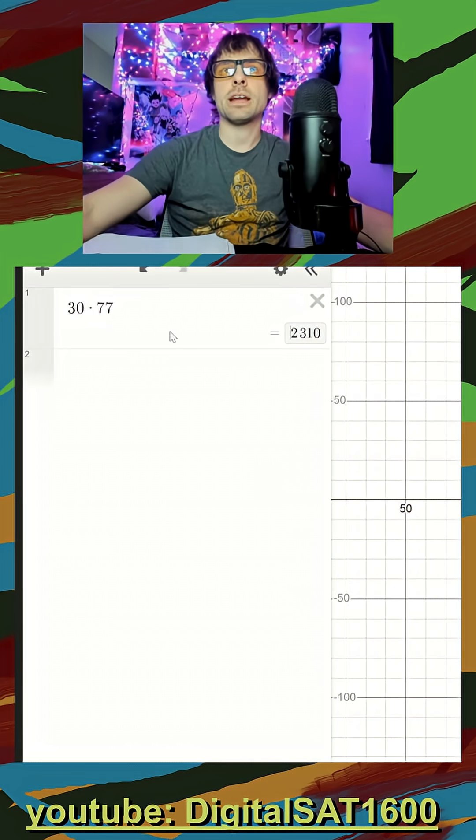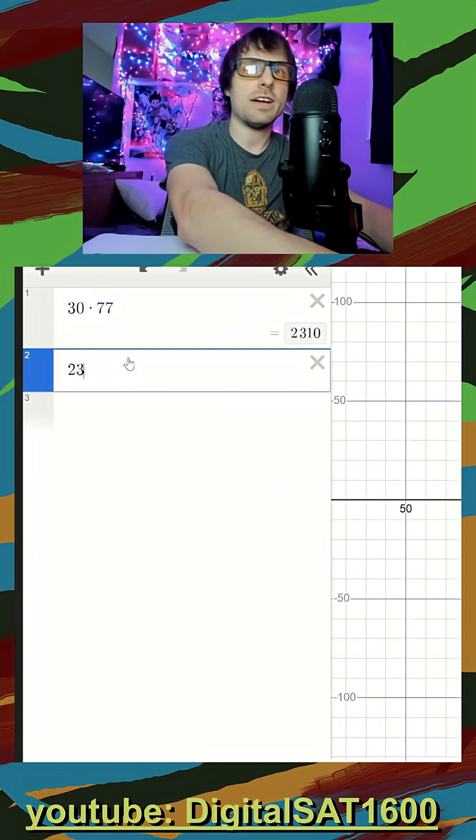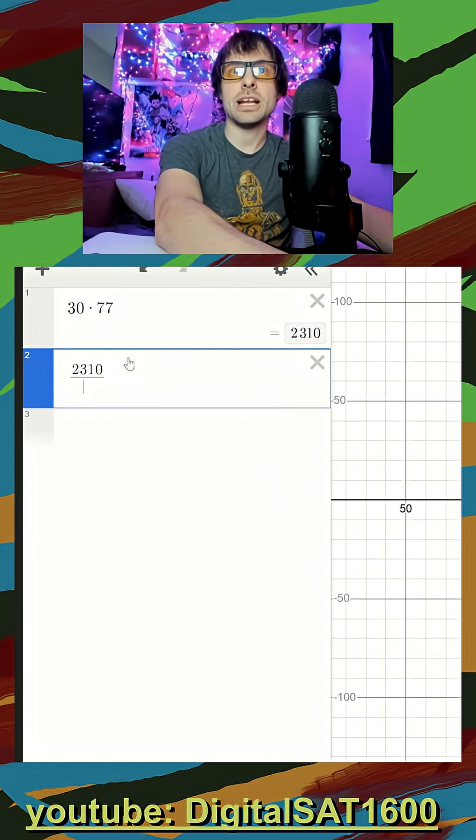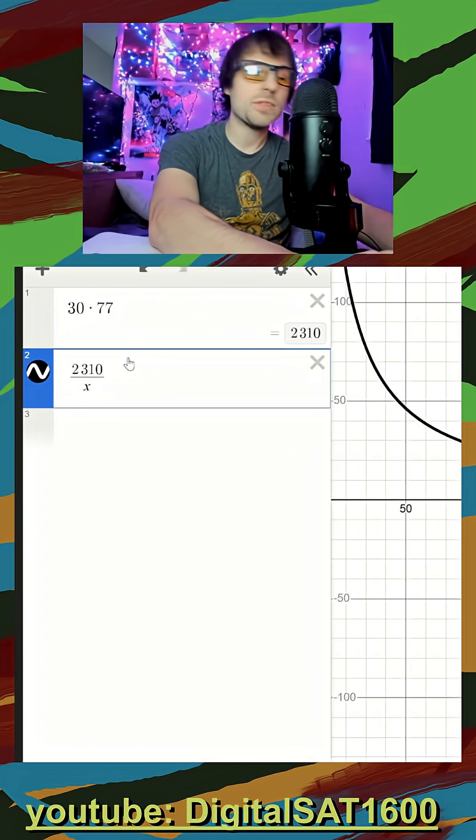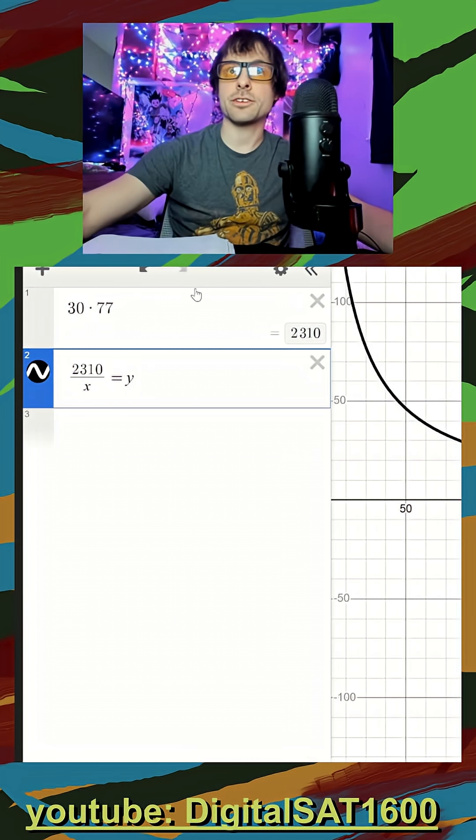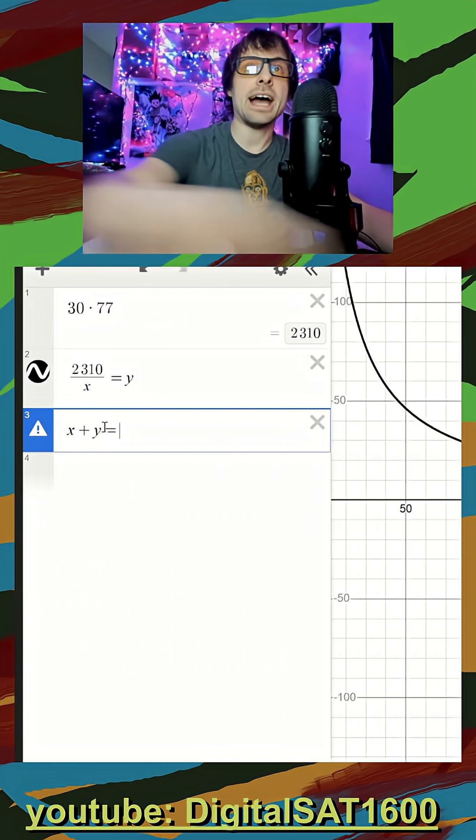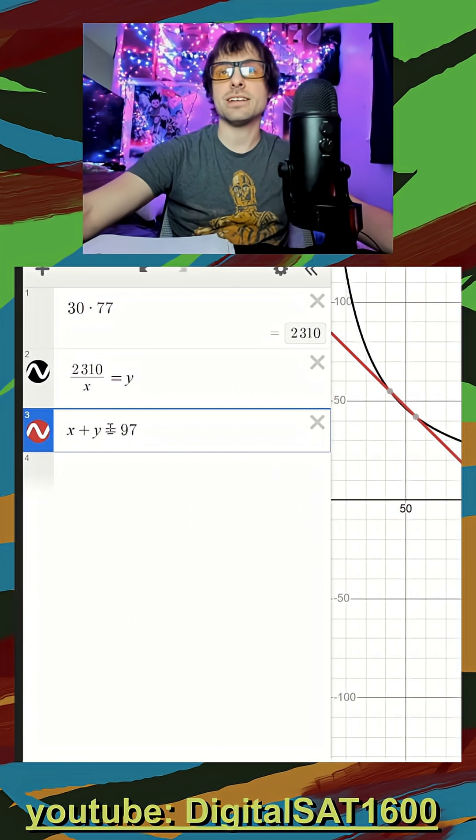So I open up Desmos and already have my a times c value here. If I take this value and divide it by some factor, it should result in the other factor that multiplies to get that. I also know that my two factors should add up to my b term, which is 97.